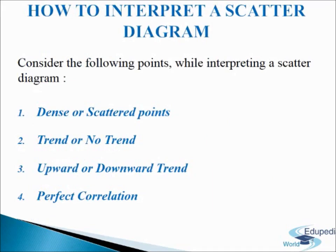The question arises: how to interpret a scatter diagram? We will consider the following points. First, dense or scattered points: if the points are close to each other, a high degree of correlation may be expected; if the points are widely scattered, a poor correlation may be expected. Second, trend or no trend: if the points show any trend — either upward or downward — the variables are said to be correlated; if no trend is revealed, the variables are uncorrelated.